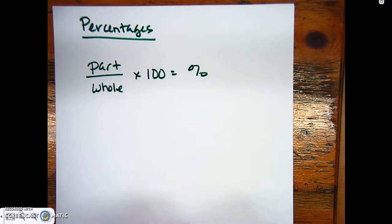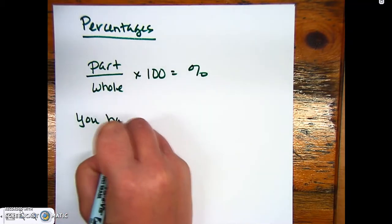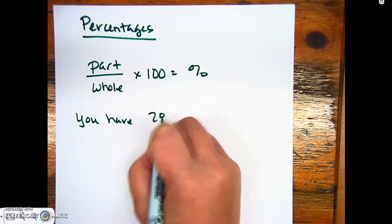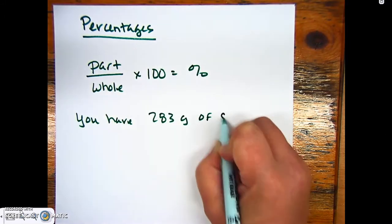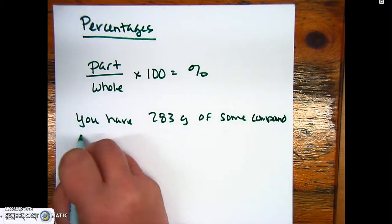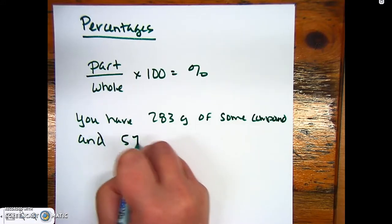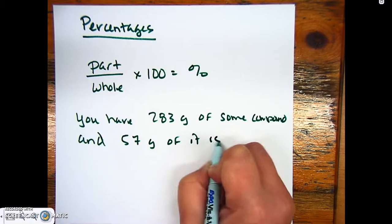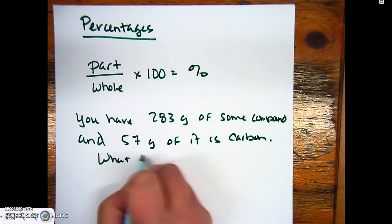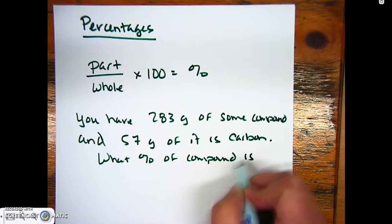If I wanted to know, let me come up with an example. You have 283 grams of some compound, and let's say 57 grams of it is carbon. We want to know what percent of the compound is carbon.